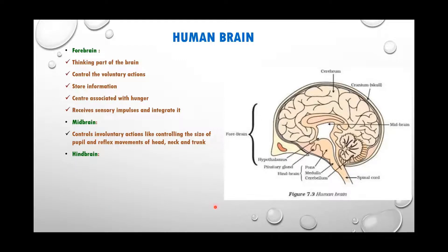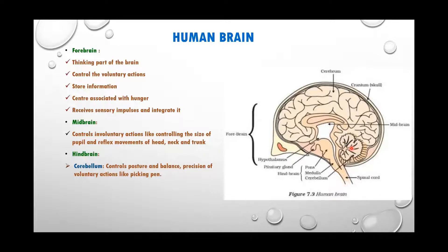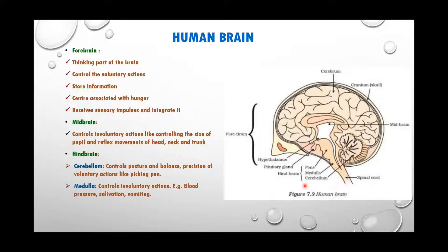The hindbrain has three parts: cerebellum, medulla oblongata, and pons. The cerebellum — you can see its flower-like structure — controls precise voluntary actions like walking on a straight line and balancing the body. Activities like cycling require very good balance. These controlled voluntary actions needing a lot of precision and practice are performed by the cerebellum.